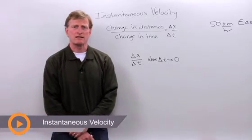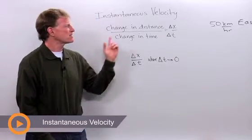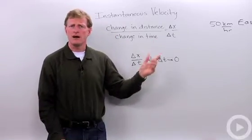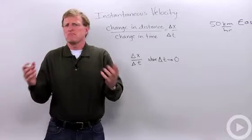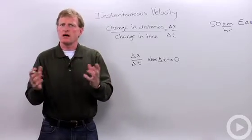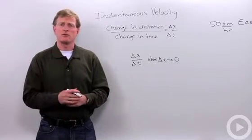Let's talk about instantaneous velocity. Instantaneous velocity is the change in distance over the change in time. You may recognize it as 100 kilometers an hour. It's what you see on your speedometer when you're driving.